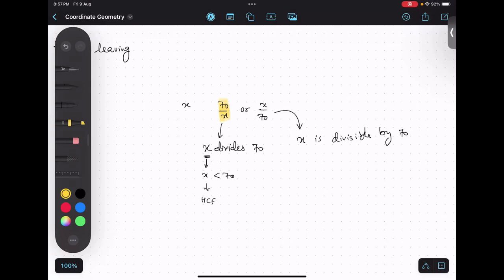Now in the second case, x is on top, which means that x is greater than 70 or minimum equal to 70. Which means we are going to find LCM. So in case of divisible by, we calculate LCM. In case of divides, we find HCF.